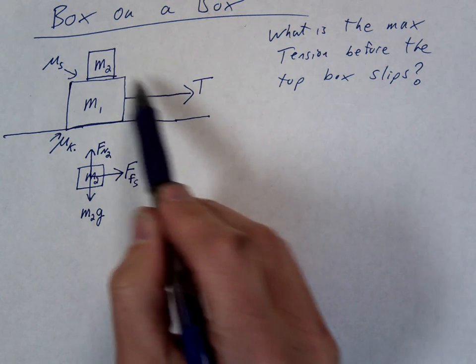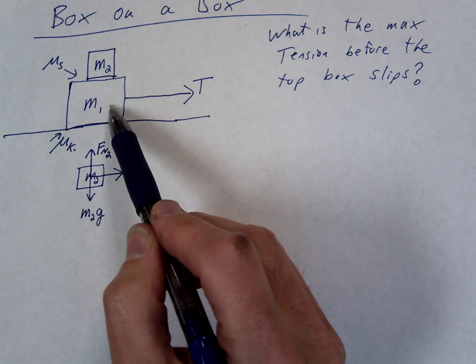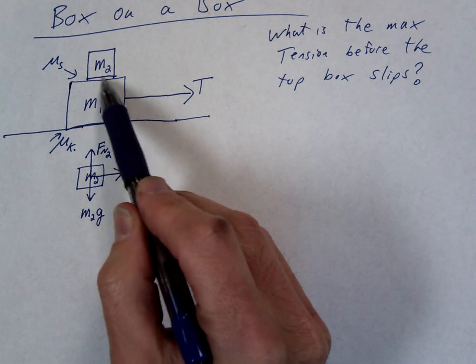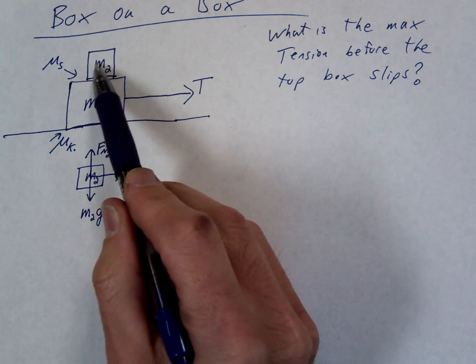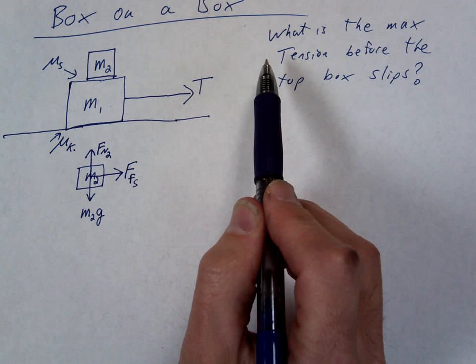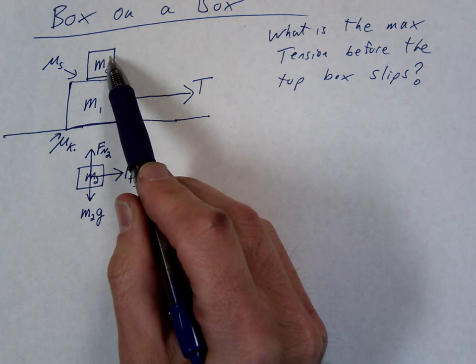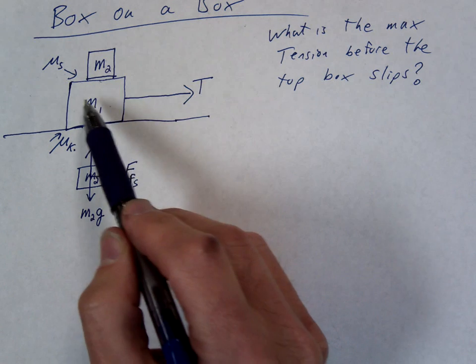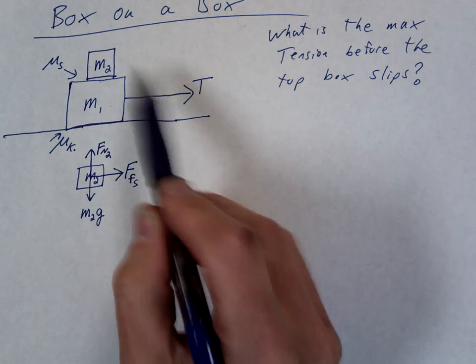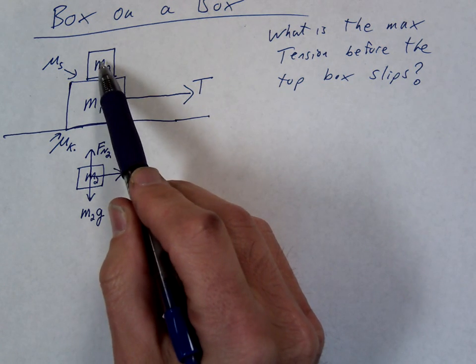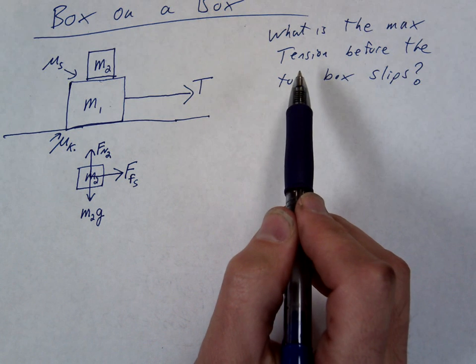So the reason M2 is going to move forward with this bottom block is because the friction between these two is the force that's going to push it forward. So if there was no friction here, what would happen to the block? It would definitely just stay there, right? You just pull it right out from underneath it. So it's the friction itself that pulls the block with it, pulls it forward.